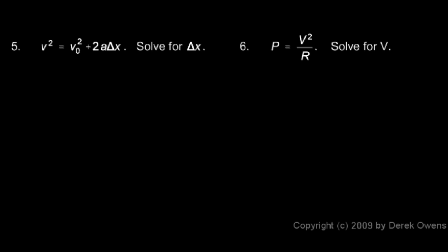So to do this, I'm going to start by subtracting v0 squared from each side. And then on the right, the v0 squared and the negative v0 squared will cancel out. And that leaves me with this.